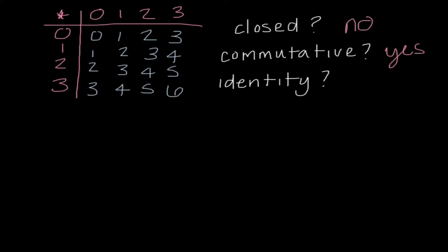The third question is: does star have an identity? An identity gets us back the original element. I need to look and see if there is a column that looks identical to the header column. Yes, this very first column is a complete match — it's connected to 0. So whenever I star 0, I get my original element back. We would say yes, there is an identity, and it is 0.